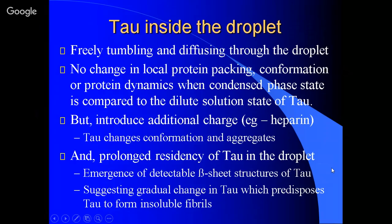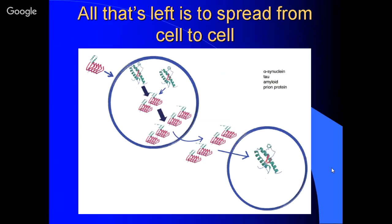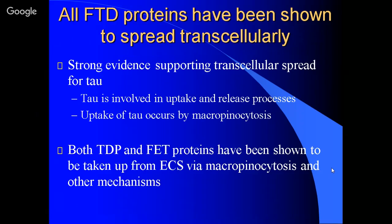All you need is transfection from one cell to another and you have prion-like mechanisms. There's strong evidence that all these proteins are capable of being transmitted to a neighboring cell, either through the synapse or through the extracellular space. The tau being in a droplet with RNA absolutely blew my mind — because I'd been thinking, how do we relate tau, this cytoskeletal protein, to RNA-binding proteins? And the answer is: tau is an RNA-binding protein.